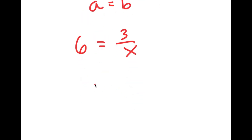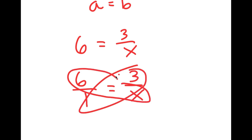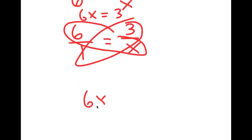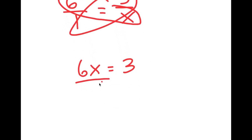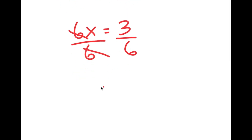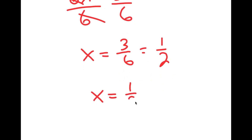I can solve this by using proportions. 6 is the same thing as 6 over 1, so I get 6 over 1 is equal to 3 over x. Now I can cross multiply: 6 times x is 6x, and 1 times 3 is 3, so I get 6x equals 3. Dividing both sides by 6, these two cancel out and I get x is equal to 3 over 6, which simplifies to 1 half. So x is equal to 1 half.